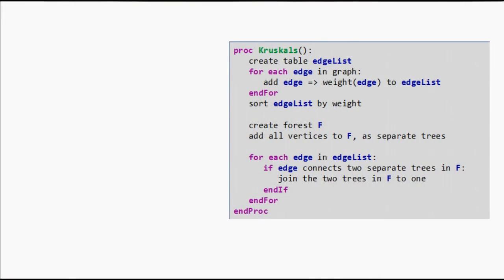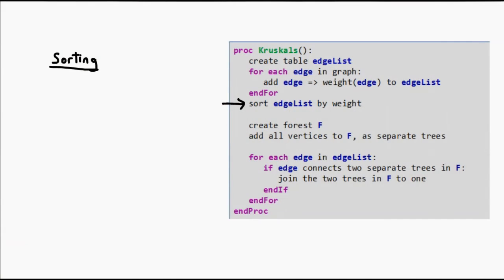First and foremost, we need to sort all the edges. Now, this one is already something that can vary a lot. Obviously, we have seen sorting algorithms on this channel, and the slower sorting algorithms will take O(E²).